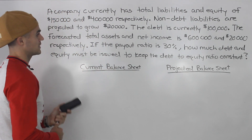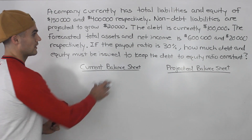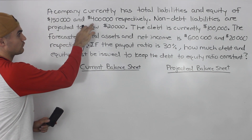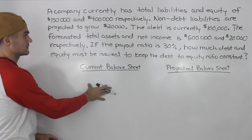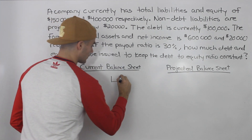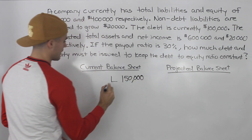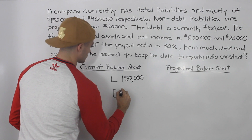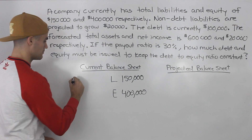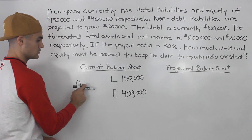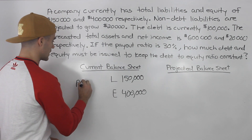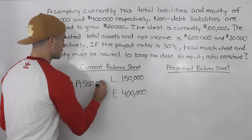So let's go through this information again and see what we can fill out for both balance sheets. A company currently has total liabilities and equity of $150,000 and $400,000 respectively — that goes on the current balance sheet. Liabilities on the right side are $150,000, equity is $400,000. We aren't told current assets directly, but assets equal liabilities plus equity: $150,000 plus $400,000 gives us $550,000.